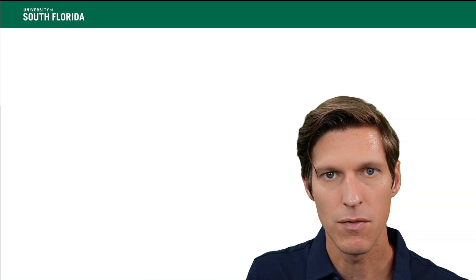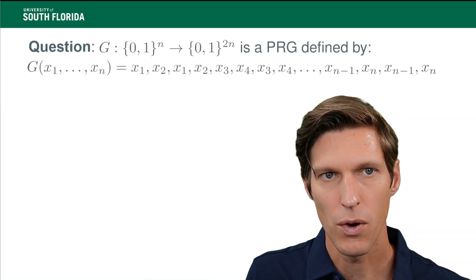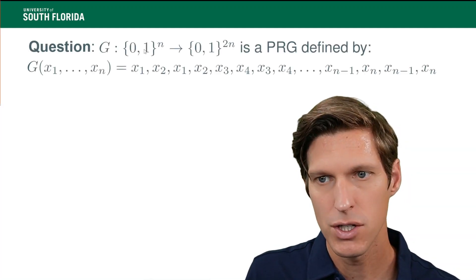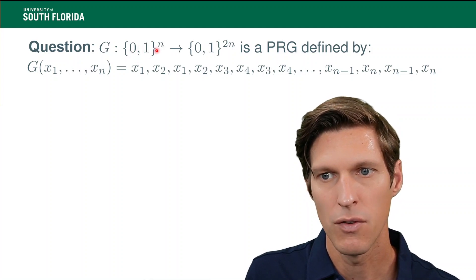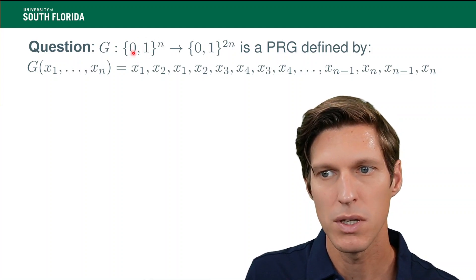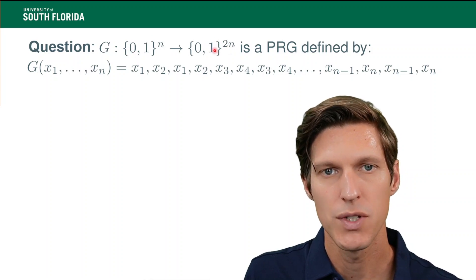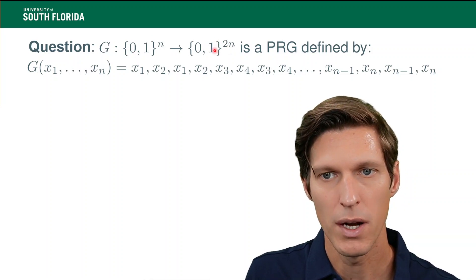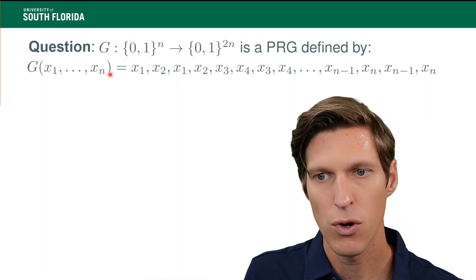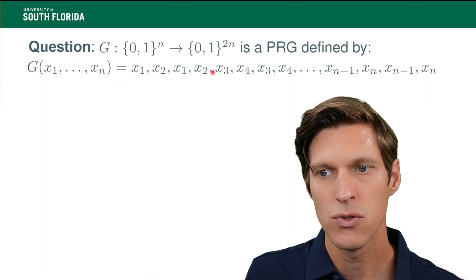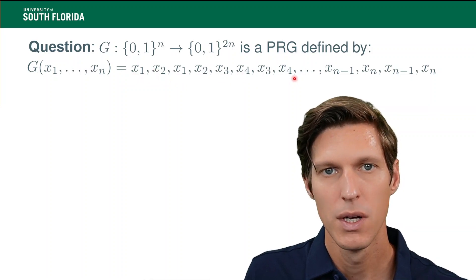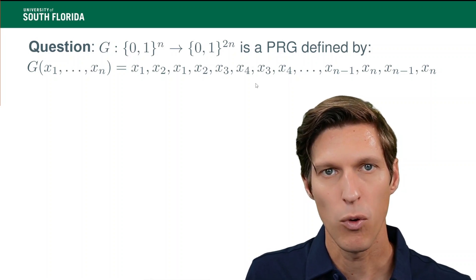I will typically give a very simple description. For example, here you have a function. The pseudorandom generator is described as a function of input n bits — which would be the key — and it spits out two times n bits. That's not a really good pseudorandom generator. It's even worse when you look at the description, because what it does is take x1...xn and return x1, x2, x1, x2, x3, x4, x3, x4. So there's a very clearly identifiable pattern.